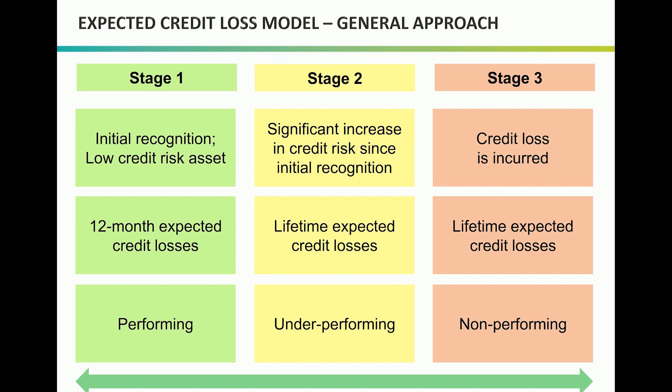Financial instruments are transferred from stage one to stage two if an entity concludes that there is a significant increase in credit risk since initial recognition. The impairment allowance on financial instruments in stage two is based on lifetime expected credit losses. Financial instruments are transferred to stage three if they are credit impaired or in default. The impairment allowance on financial instruments in stage three is also based on lifetime expected credit losses.